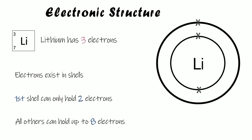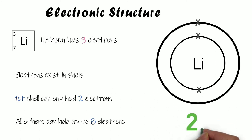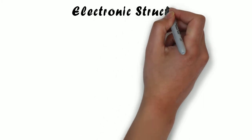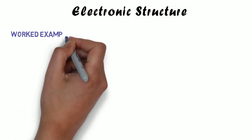We also need to be able to write the electronic structure. To describe lithium's arrangement, we say there are two electrons in the centre and one in the next shell, so we write the electronic structure as 2,1. We're basically using numbers to describe how the electrons are arranged rather than drawing it.